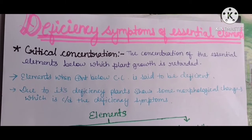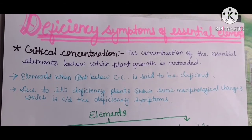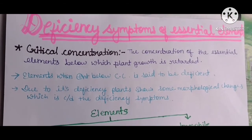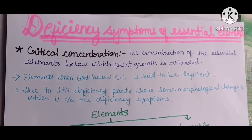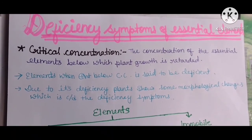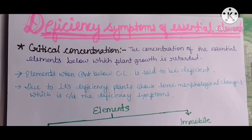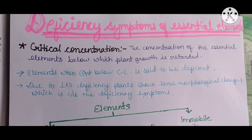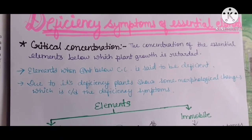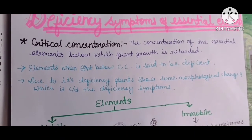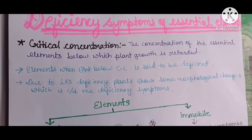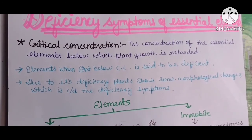First of all, we need to understand what is critical concentration, so we can understand the deficiency symptoms. Critical concentration is the concentration of essential elements below which the plant growth is retarded. There is a critical concentration in plants.